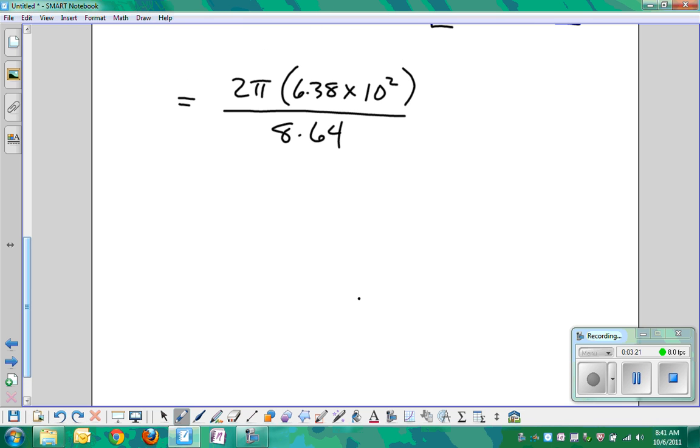We get 4.639 times 10 to the second, right? That's hundreds of meters per second. Wait, that doesn't seem right. This was 10 to the sixth up here, and this is 8.64 × 10^4. Would it be easier if I wrote it out? Yes.